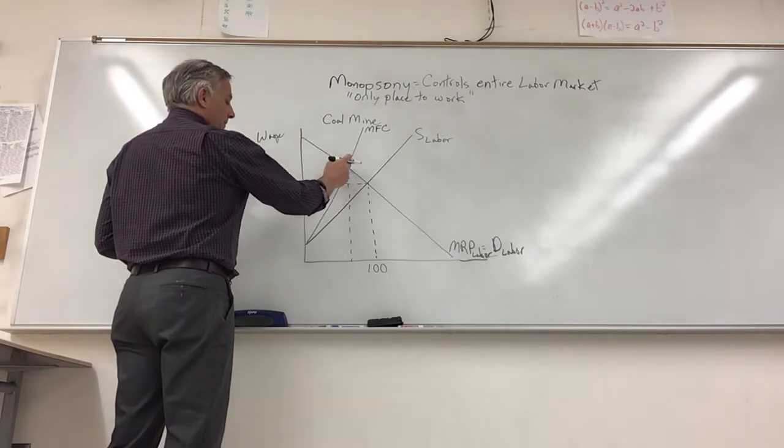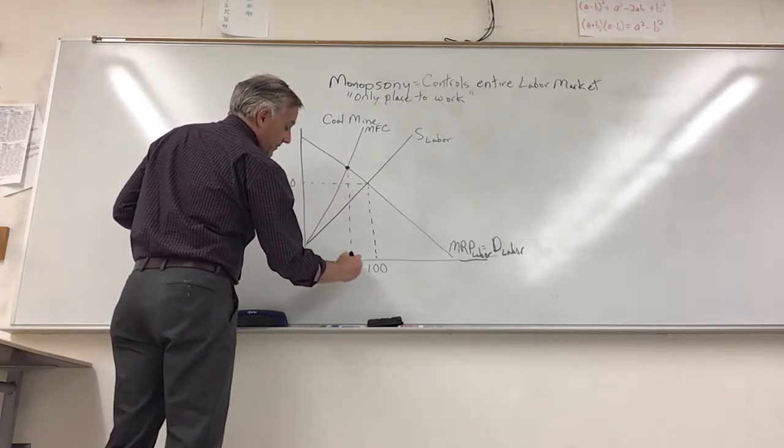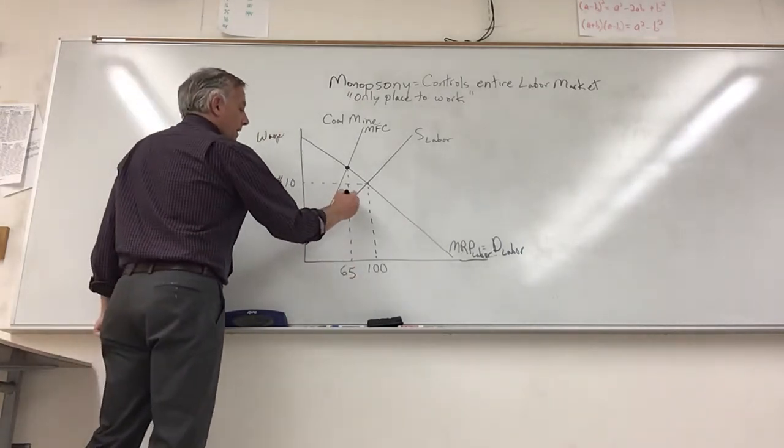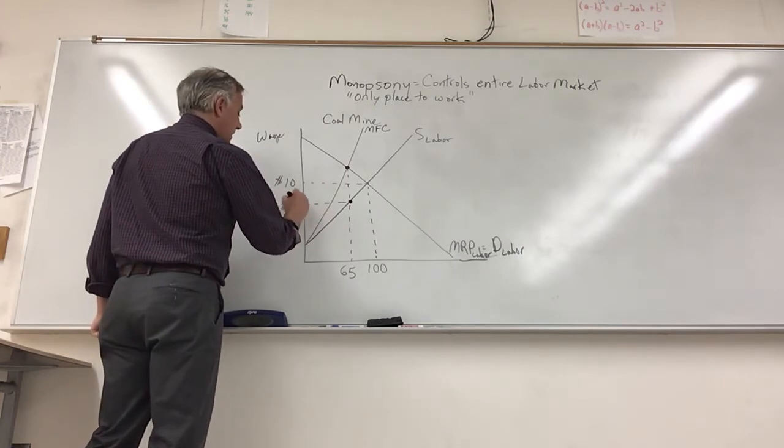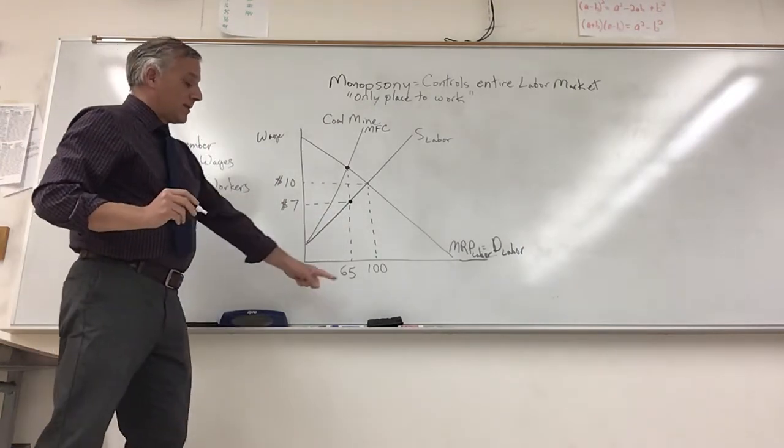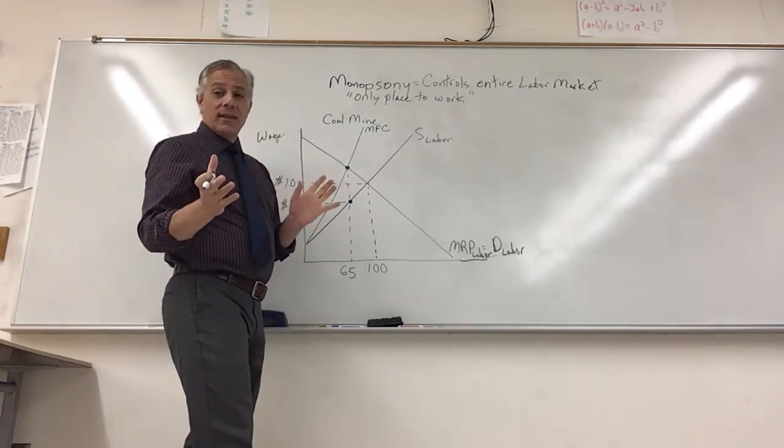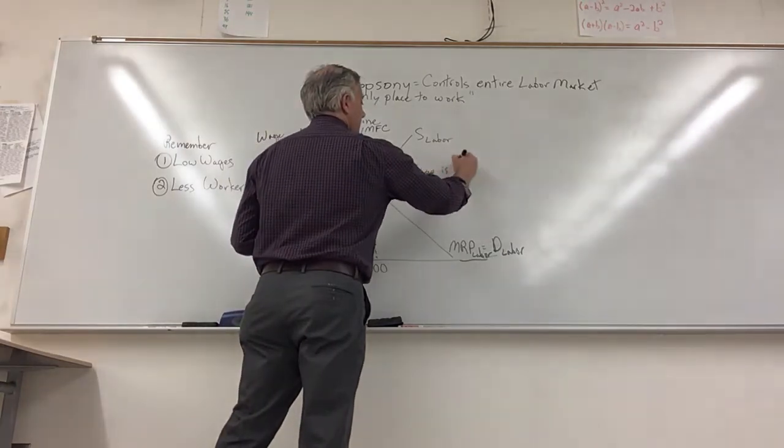This is where MFC equals MRP. So let's say this is 65 workers. Well, the wage now comes down to here, and we'll say that that's a seven dollar an hour wage. Question for the quiz: wage is always...